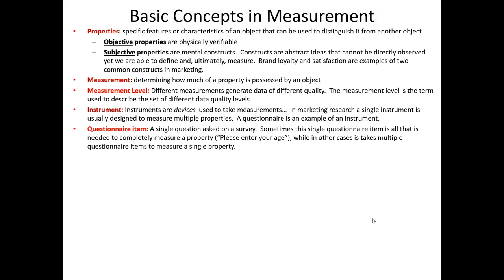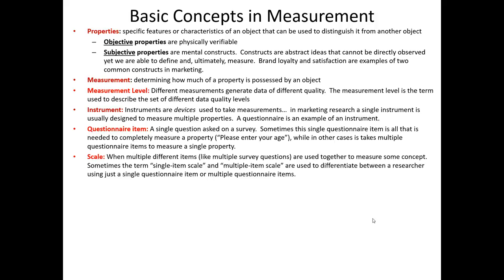In many cases, a single questionnaire item is enough to measure a property we're interested in. For example, if we were interested in measuring a consumer's age, we could just ask them to enter their age. In other cases, it takes multiple questionnaire items to measure a single property. When this happens, we are referring to a scale — when multiple different items are used together to measure some single concept, construct, or subjective property.